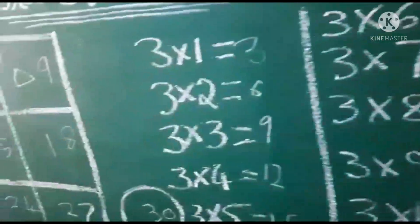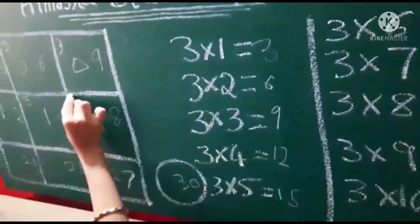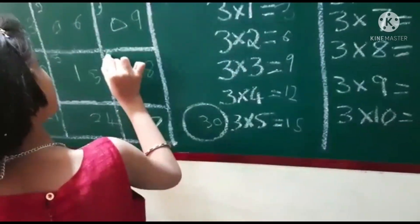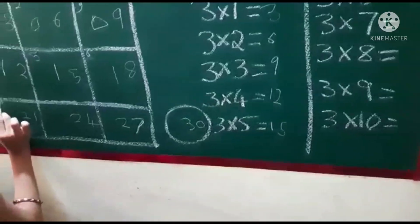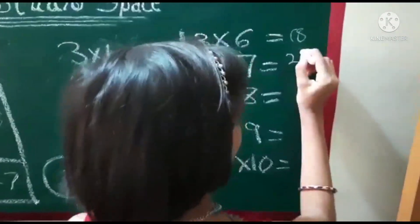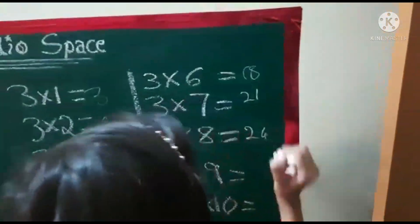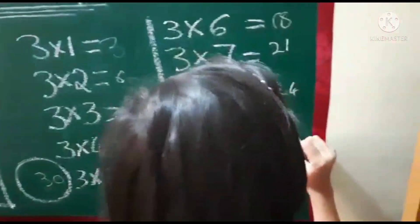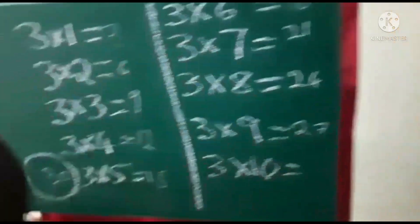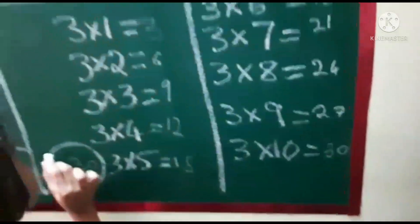3 sixes are 18. 3 sevens are 21. 3 eights are 24. 3 nines are 27. And 3 tens are 30.